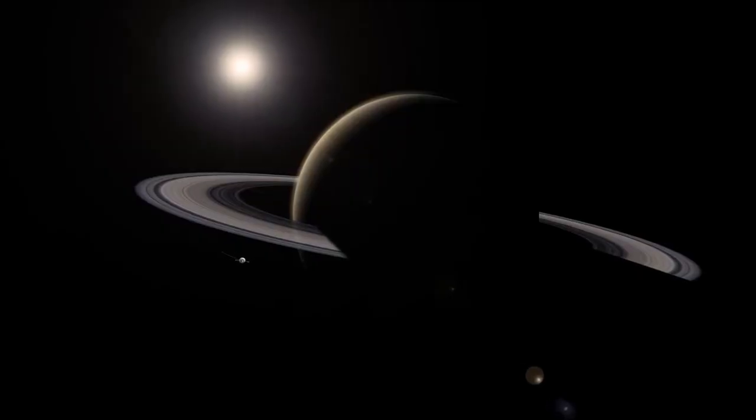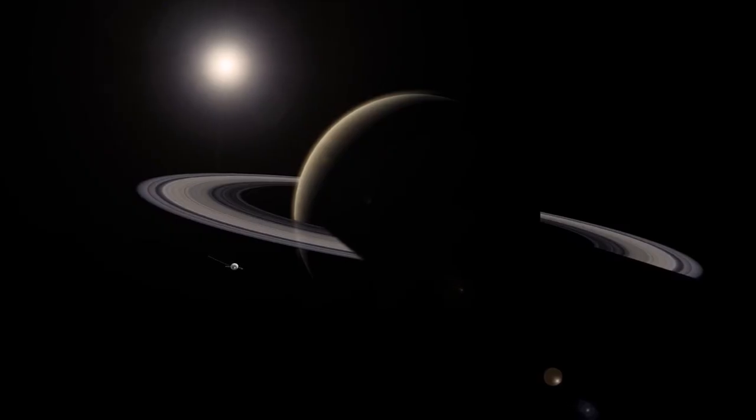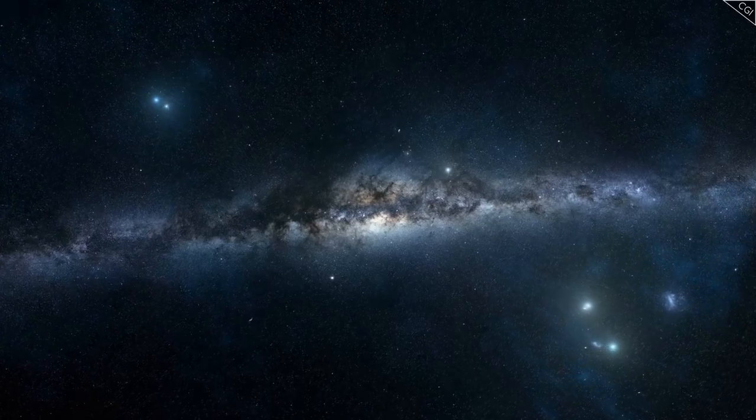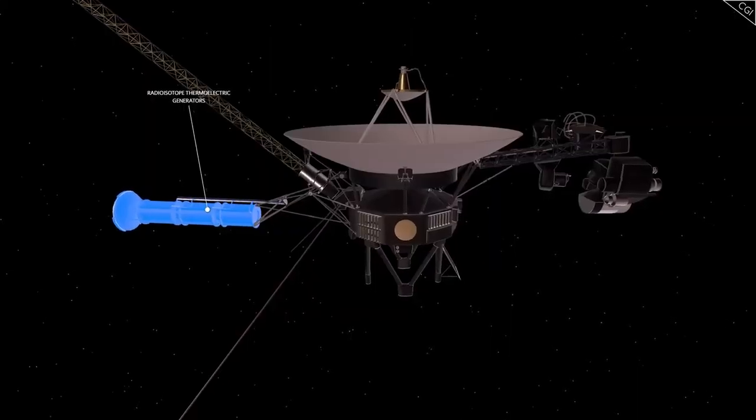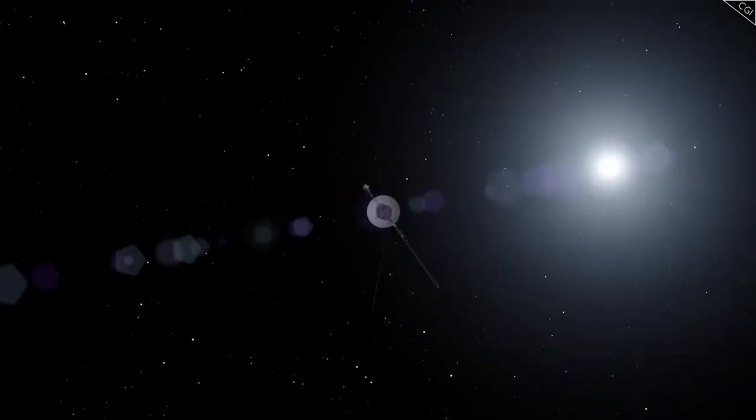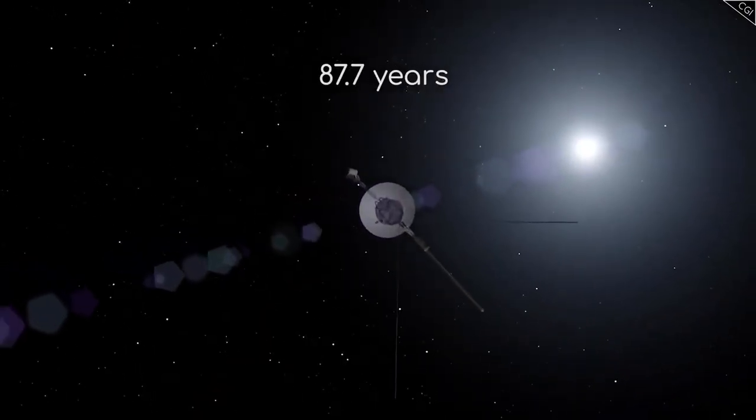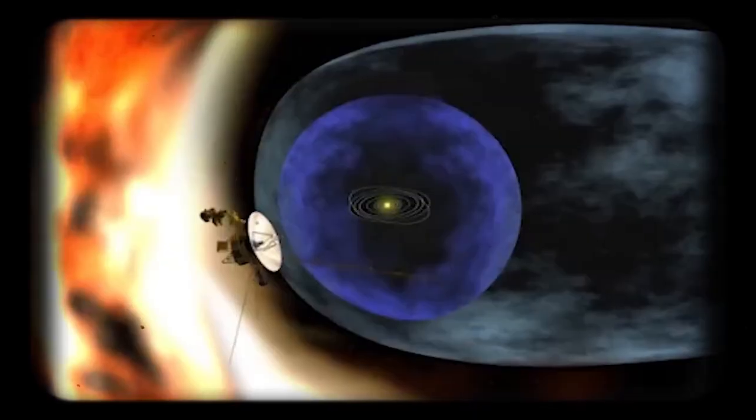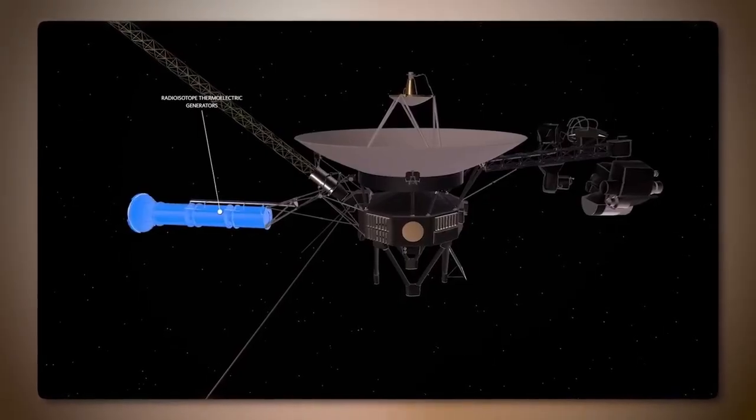Eventually, the solar wind meets the interstellar medium, a region filled with remnants of ancient stellar explosions. Much like oil and water, the solar wind and the interstellar medium don't easily mix, creating a boundary called the heliosphere. This vast bubble, powered by the solar wind, extends roughly 11 billion miles from the Sun, encapsulating the Sun, all eight planets, and a significant portion of the solar system's outer regions.